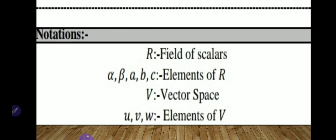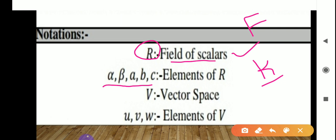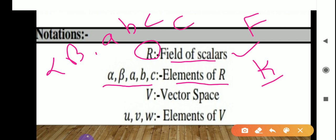Now let us start unit 3, that is vector spaces and inner product spaces. In this unit we have to use some notations, which are very important. In most books, the field of scalars is denoted R; in some books K is used, and in others F. We will use capital R here — capital R denotes the scalar field. The symbols α, β, A, B, C are the elements of R, meaning these are the scalars: α, β, A, B, C all belong to R.